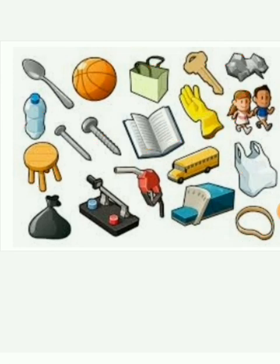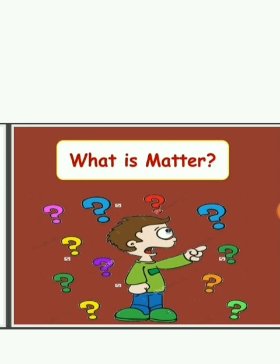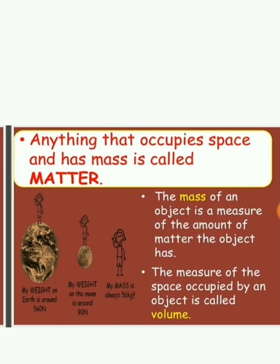Objects are also called as matter. In our previous class on the nature of matter topic, we learned that whatever the object we called as matter. Recall the meaning of matter. Anything that occupies space and has mass is called matter. Whatever the object which occupies space and has mass, that type of object we call as matter. Give an example for matter.